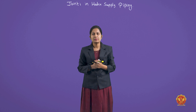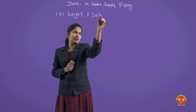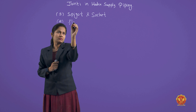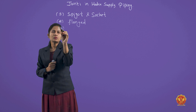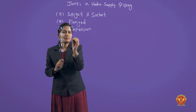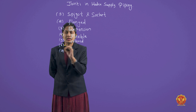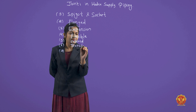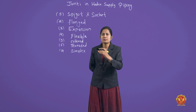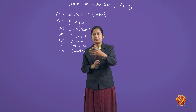We have various kinds of joints available. Like in some pipes we provide spigot and socket joints, in some pipelines we need flanged joints. According to need, these types of joints vary. We have: expansion joint, flexible joint, collared joint, threaded joint in pipes, and seventh is the simplex joint. We choose the joint according to the requirement, and for materials like steel and GI (galvanized iron) pipes, we choose a particular joint.